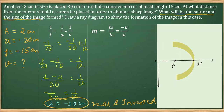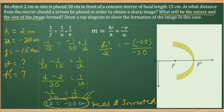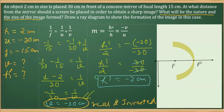For the size of the image, we use the magnification formula: h'/h = -v/u. We need to find h', the height of the image. Replacing h with 2 centimeters, v with minus 30, and u with minus 30: h'/2 = -(−30)/(−30). Simplifying, the 30s cancel and we get h' = minus 2 centimeters.